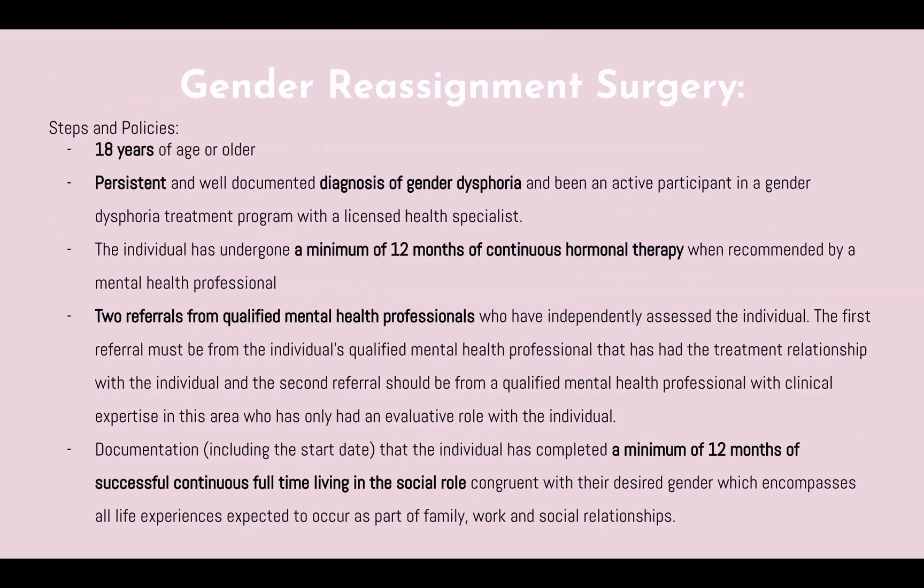Gender reassignment surgery has very different policies and steps in different states and even different institutions, but these are the most general requirements found across our research. Those who want to undergo gender reassignment surgery must be 18 years of age or older, have a persistent and well-documented diagnosis of gender dysphoria, have undergone a minimum of 12 months of continuous hormonal therapy, have two referrals from qualified mental health professionals — one of whom must have had a treatment relationship with the individual for at least a year — and must have documentation of completing a minimum of 12 months of successful continuous full-time living in the social role congruent with their desired gender.